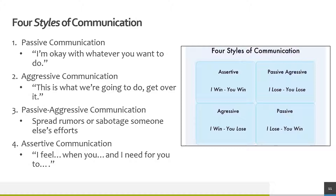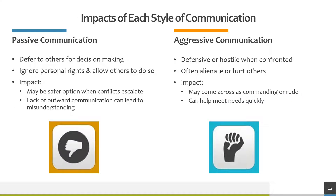The four styles of communication are different than the three ways of communicating — they refer more to how you communicate what you want to say. The four styles are passive, aggressive, passive-aggressive, and assertive communication. Passive communicators often defer to others for decision making and ignore their own personal needs, and will allow others to ignore their personal needs as well. This style may be safer if a conflict escalates, but the lack of communication can lead to misunderstandings or result in a buildup of anger or resentment.